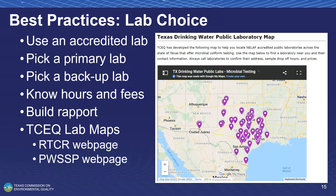When selecting a lab, make sure you're using an accredited lab. You can find an accredited lab map on the RTCR webpage or the PWSSP webpage. Keep in mind labs' hours and fees — often there is an added fee for weekend sampling. It's also a good idea to build a rapport with your lab; that way they're familiar with your sampling and know what to expect when reviewing your MRF at drop-off.